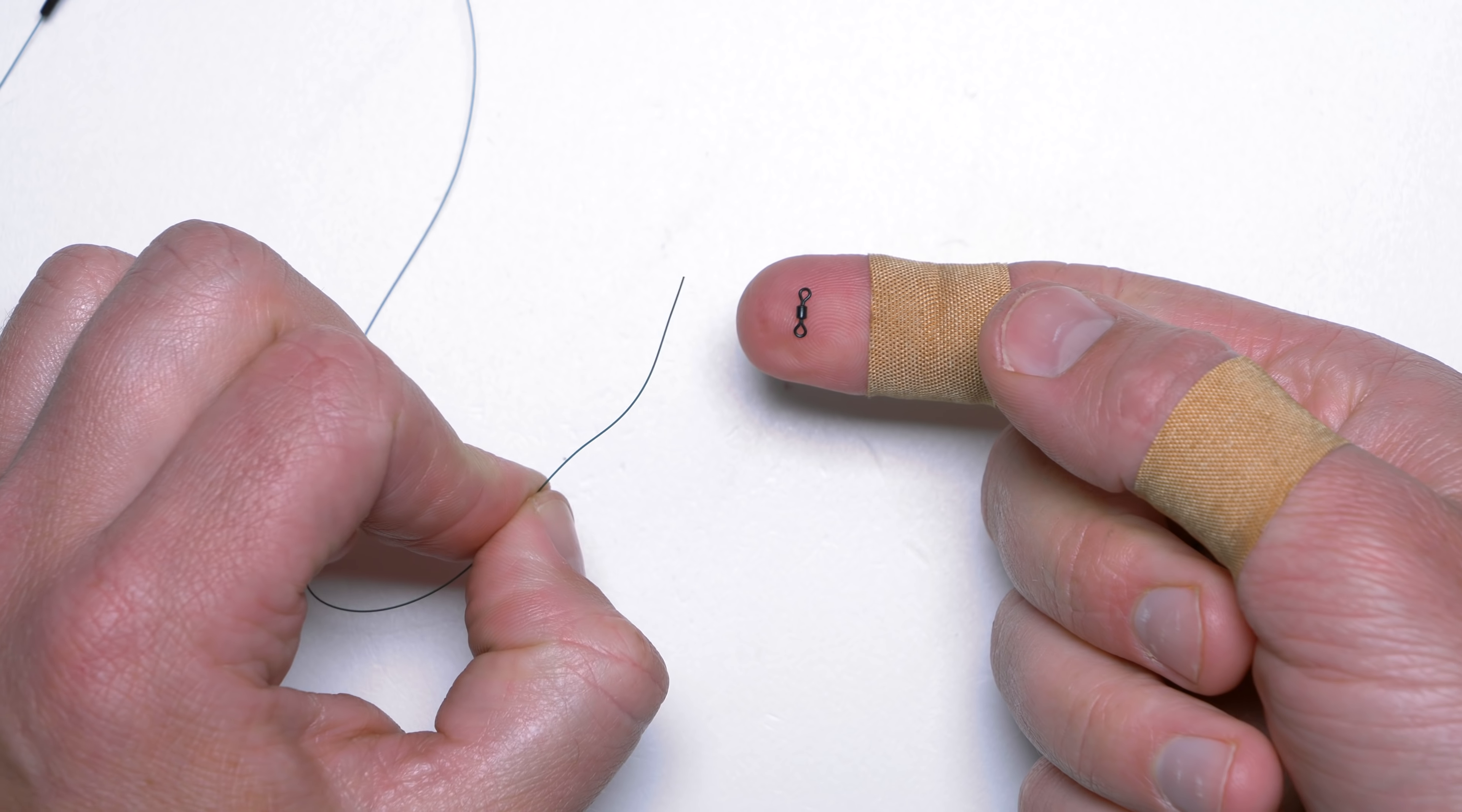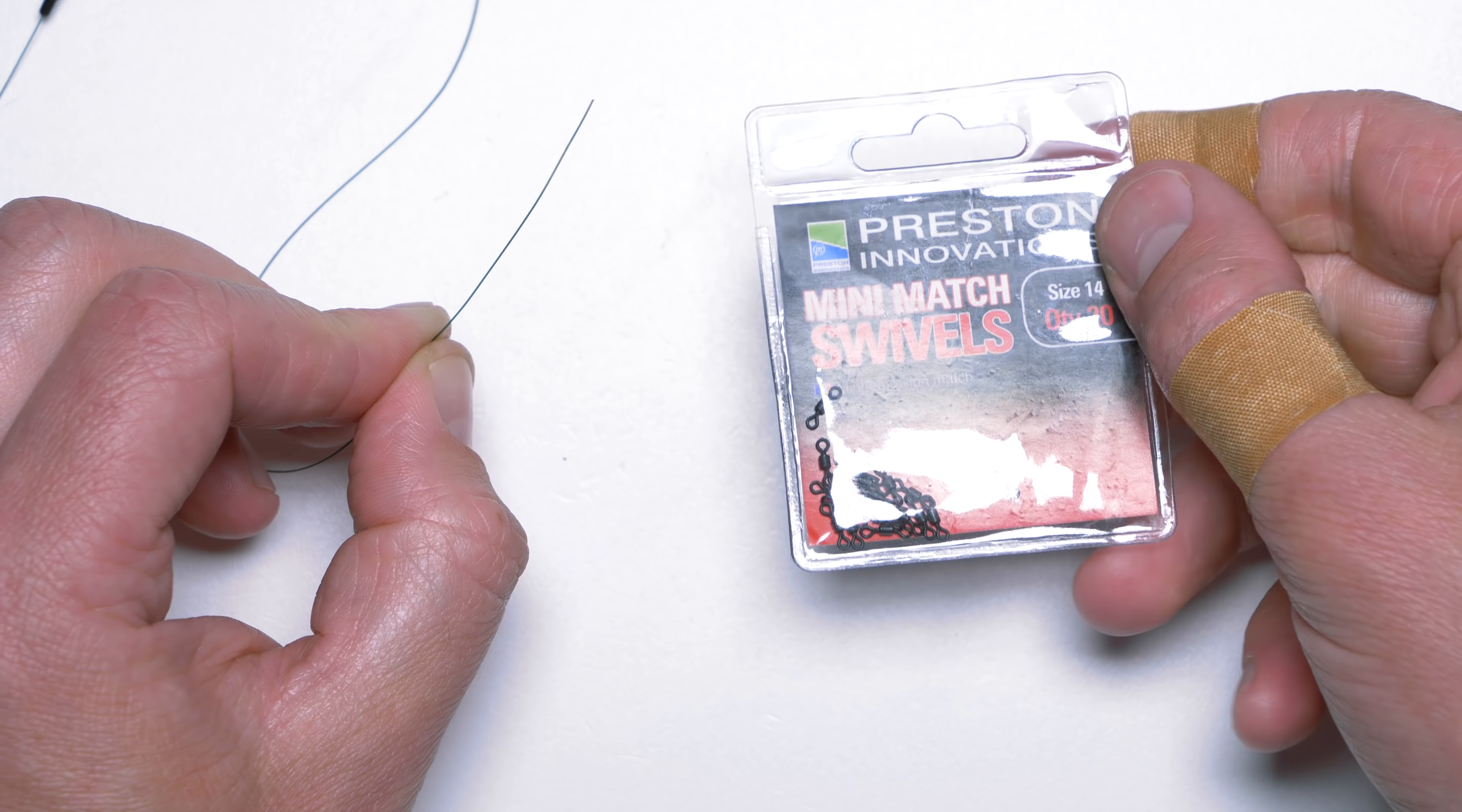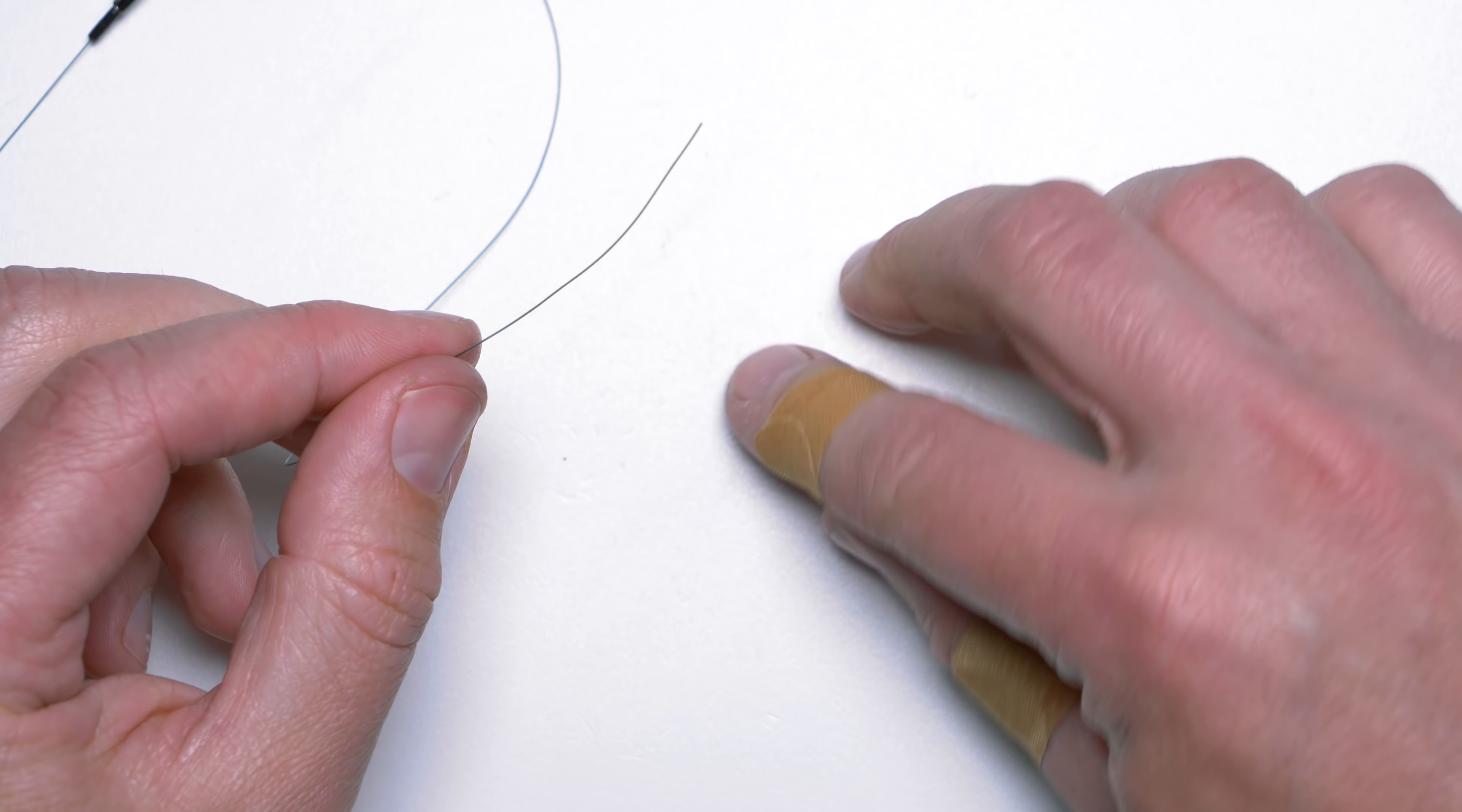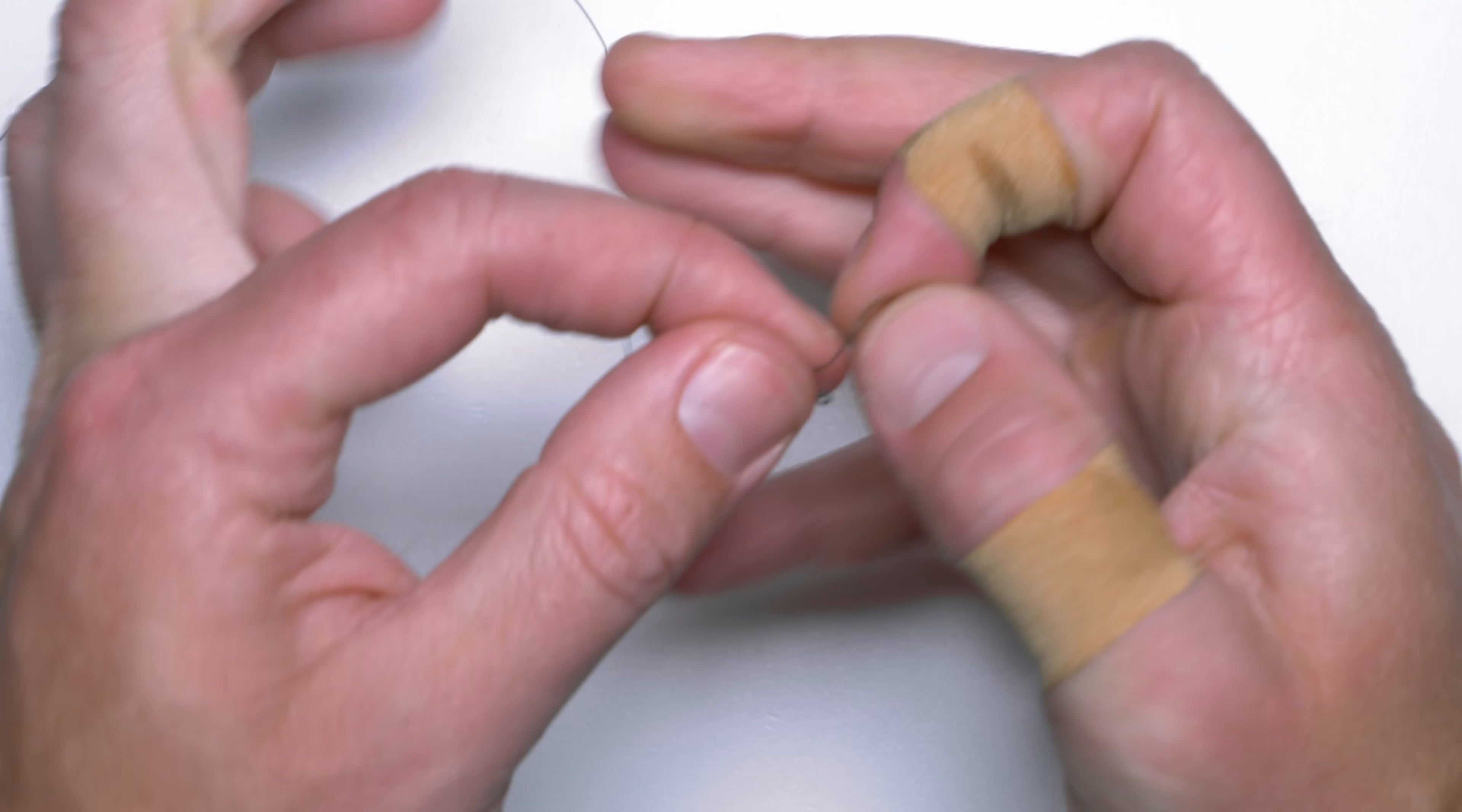Then I will attach a very small swivel at the end of the line. It should be size 14 or 16 or something like that, the smallest you can get actually. In this case I have Preston ones, they are called mini match swivels. So I will attach it onto the line using greener knot.